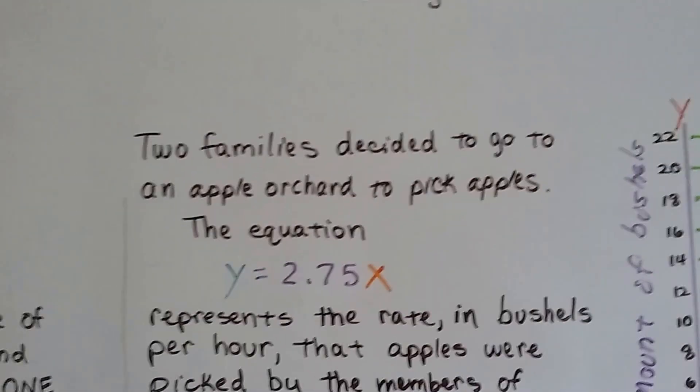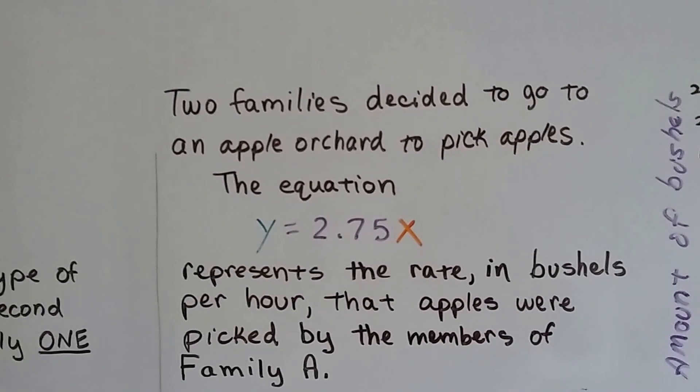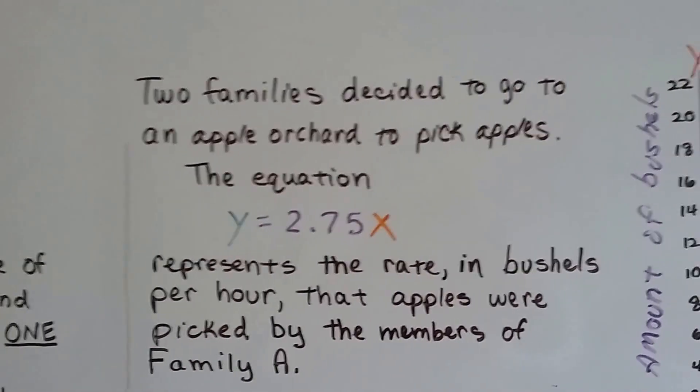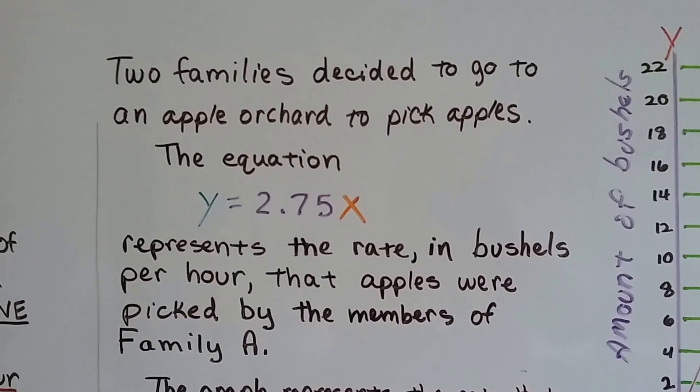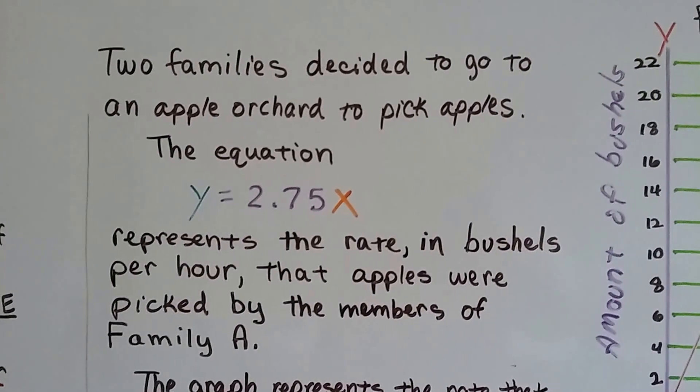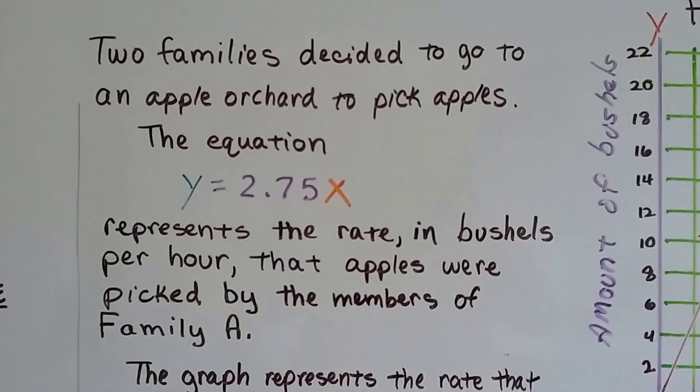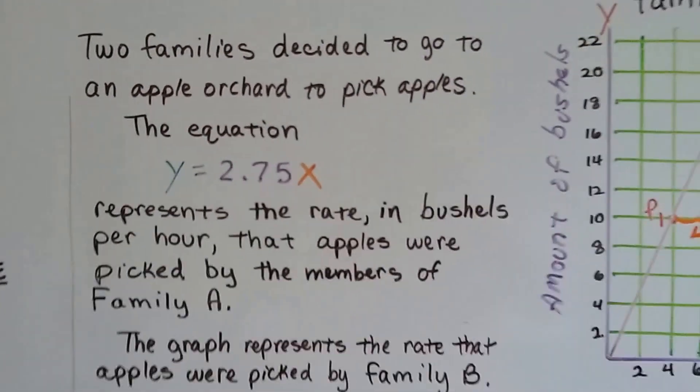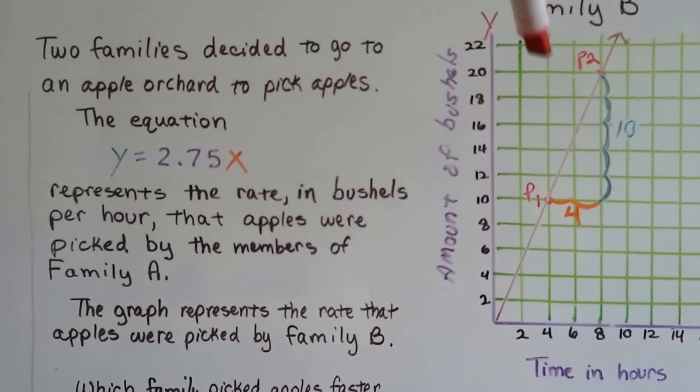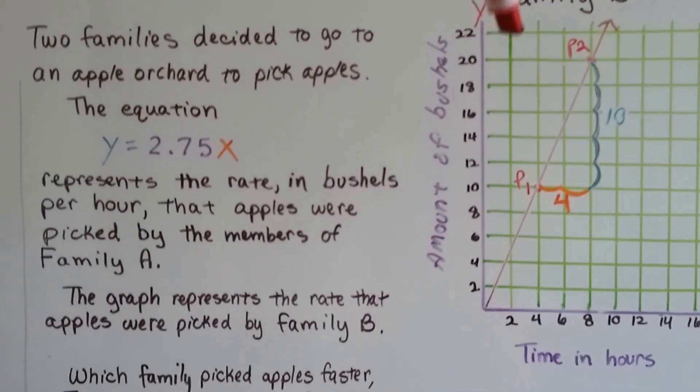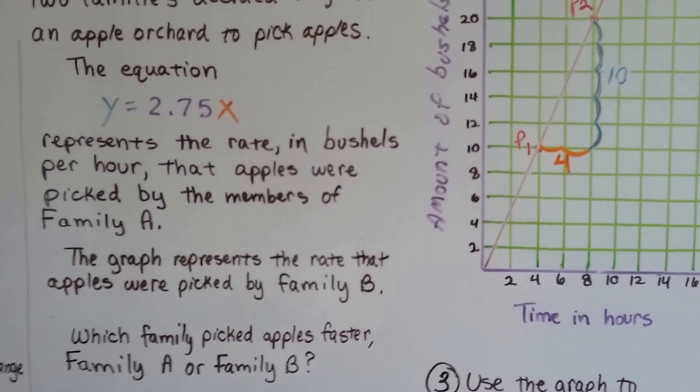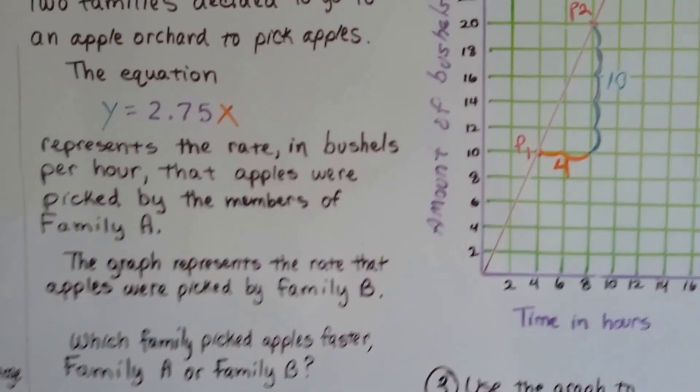So two families decided to go to an apple orchard to pick apples. The equation y equals 2.75x represents the rate in bushels per hour that apples were picked by the members of family A. The graph represents the rate that apples were picked by family B. So which family picked apples faster, family A or family B?